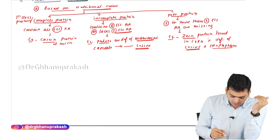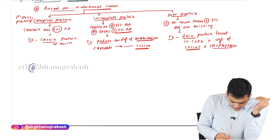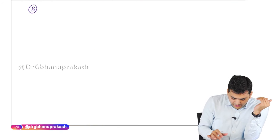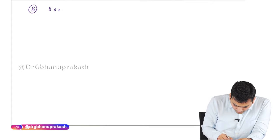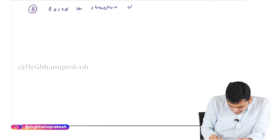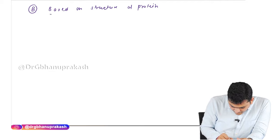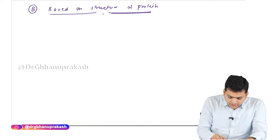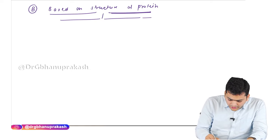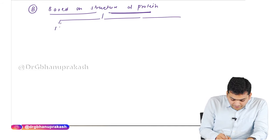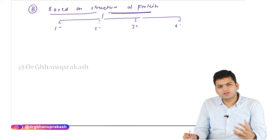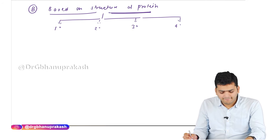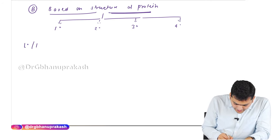The second classification of protein is based on the structure of the protein. When we classify protein based on structure, the subcategories are the primary structure, the secondary structure, the tertiary structure, and the quaternary structure. We are going to discuss them in detail. Let's start with the primary structure of the protein.